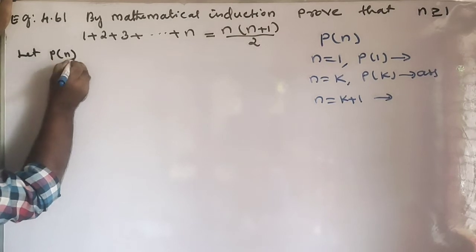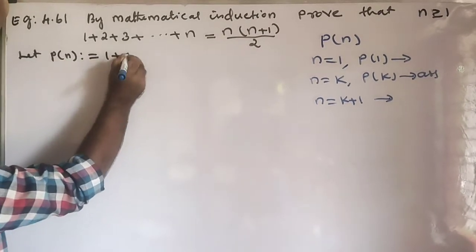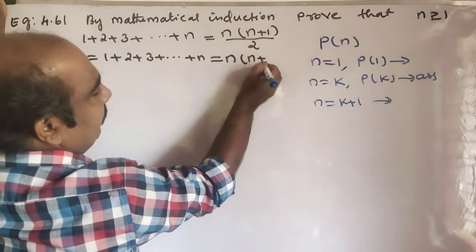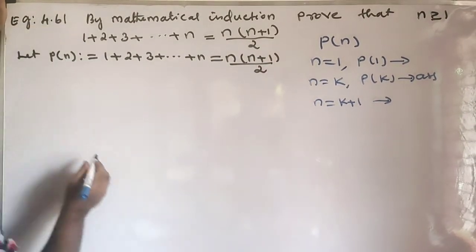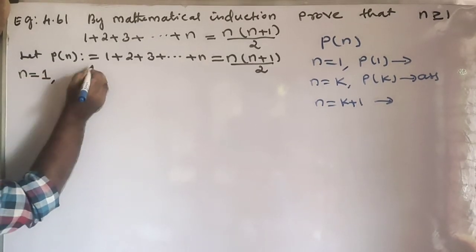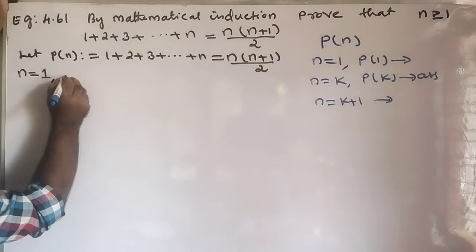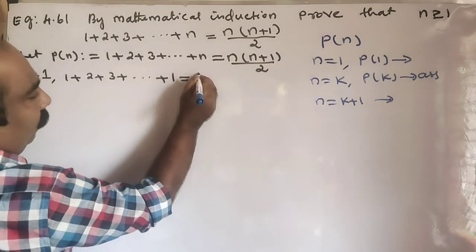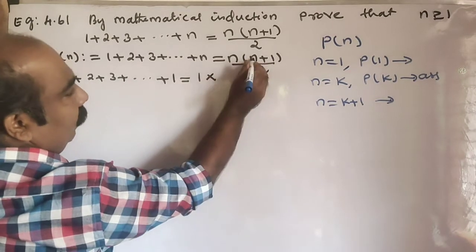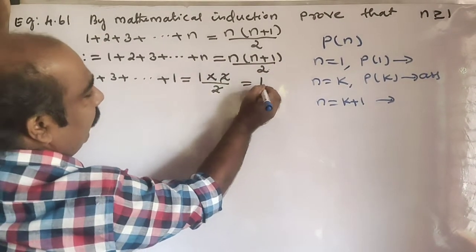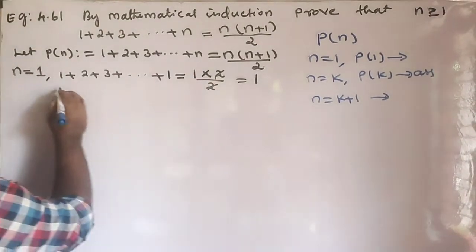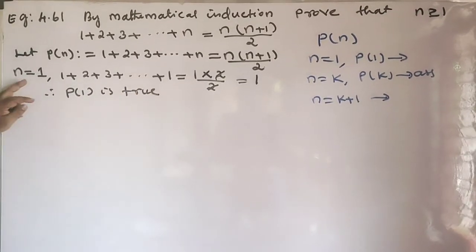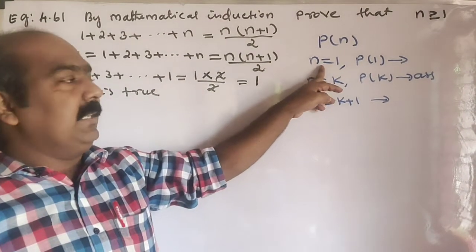Let P(n) equal 1 plus 2 plus 3 plus etc. plus n, equal to n(n+1)/2. Firstly, let n equal to 1. Therefore P(1) is true. First category complete.